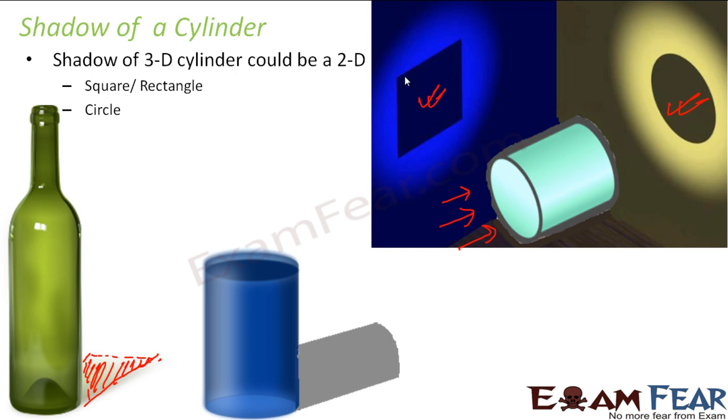Shadow of a three-dimensional cylinder could be a two-dimensional square or rectangle or a circle. Now when would the shadow be a square and when would it be a rectangle? Depending upon the length of the cylinder. Like if the cylinder is very long, in that case, definitely the shadow would be a rectangle. For example, if you have a cylinder like this, so definitely the shadow would be a rectangle.